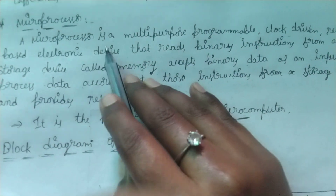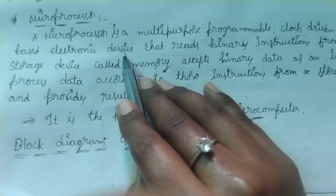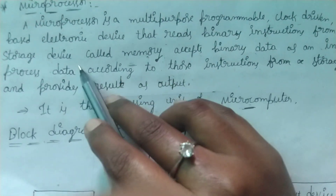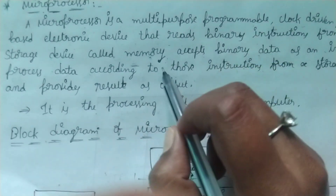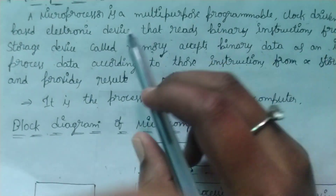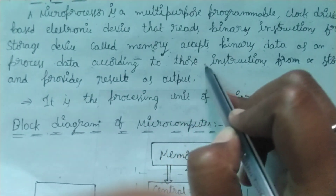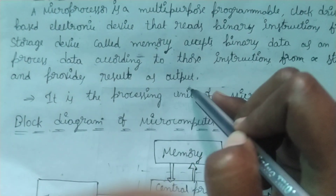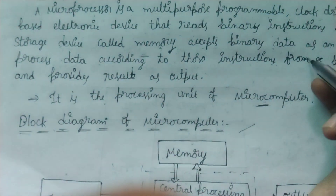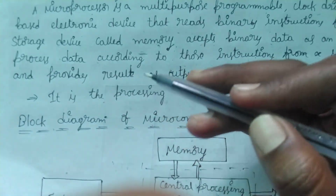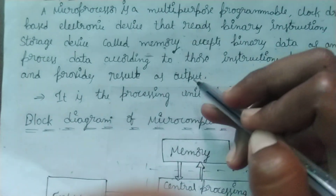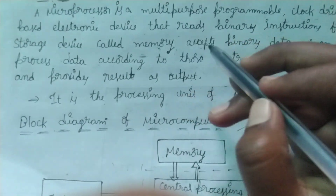It is a register-based electronic device that reads binary instructions from a storage device called memory. Memory is the storage device from which binary instructions can be read. It accepts binary data as input, processes that data according to those instructions, and provides results as output.